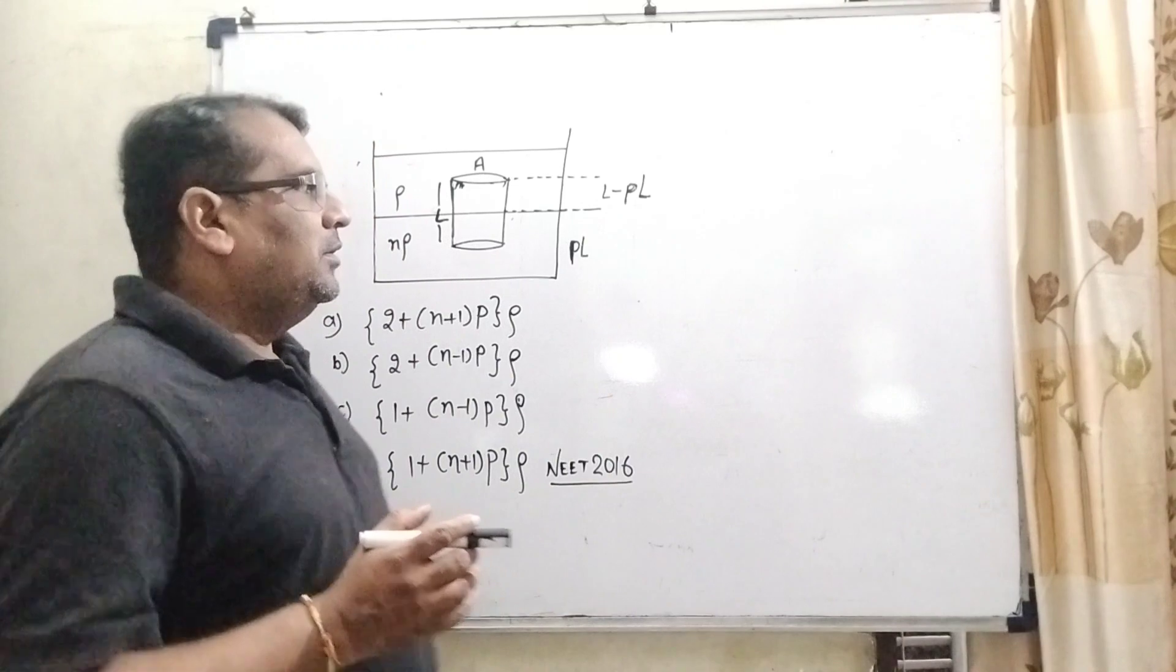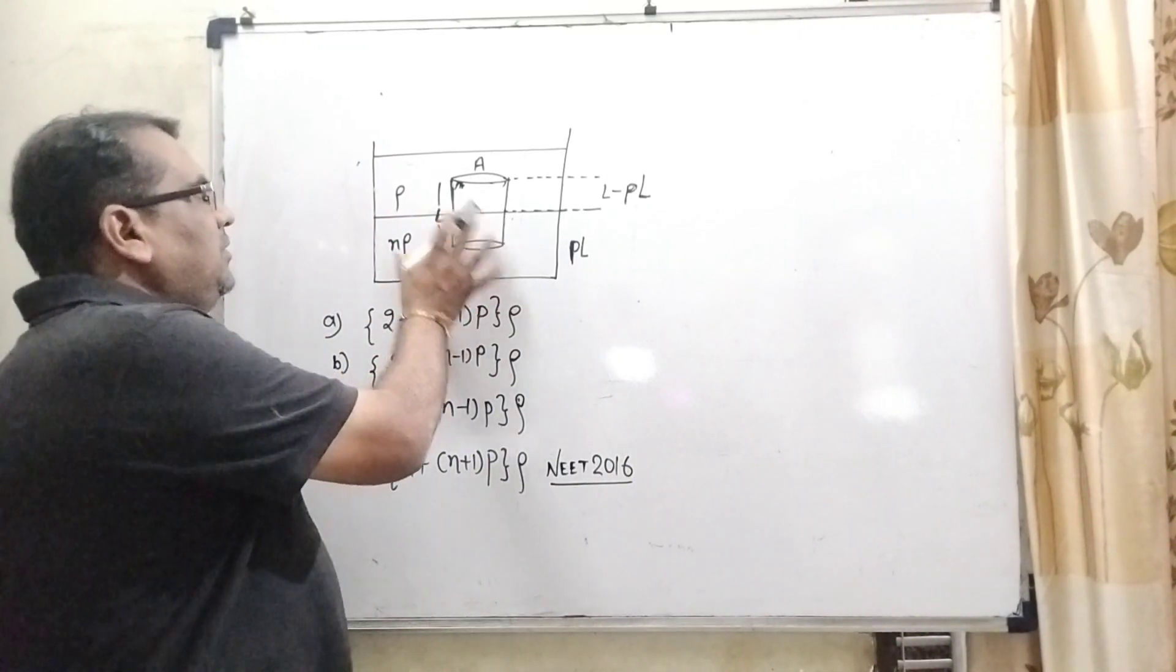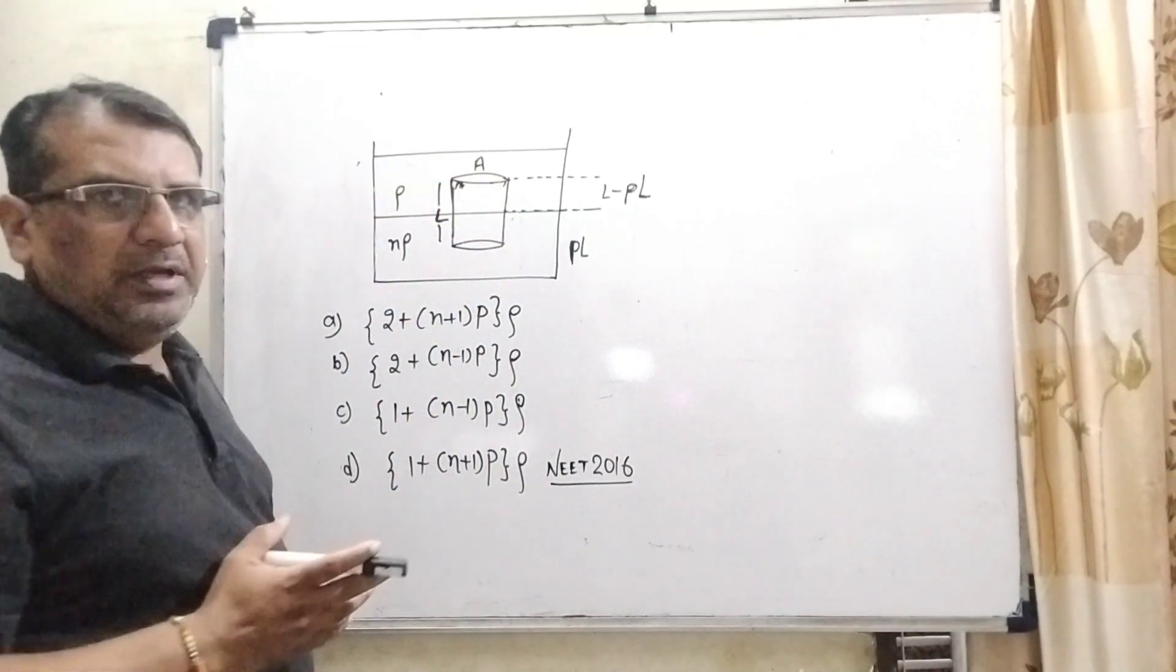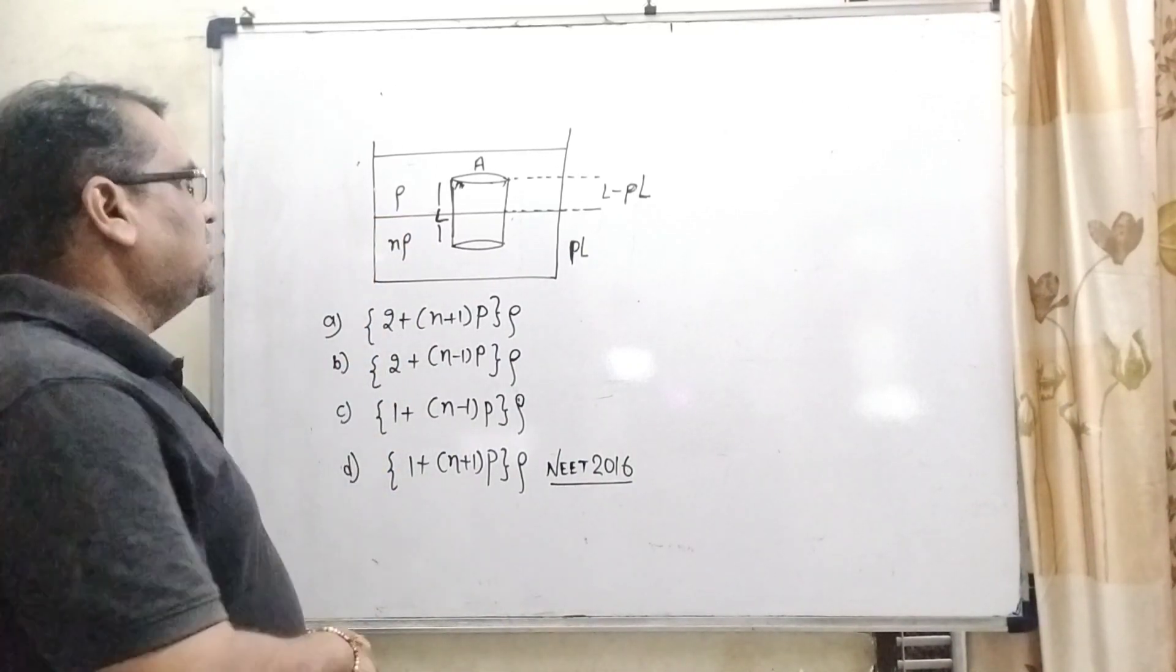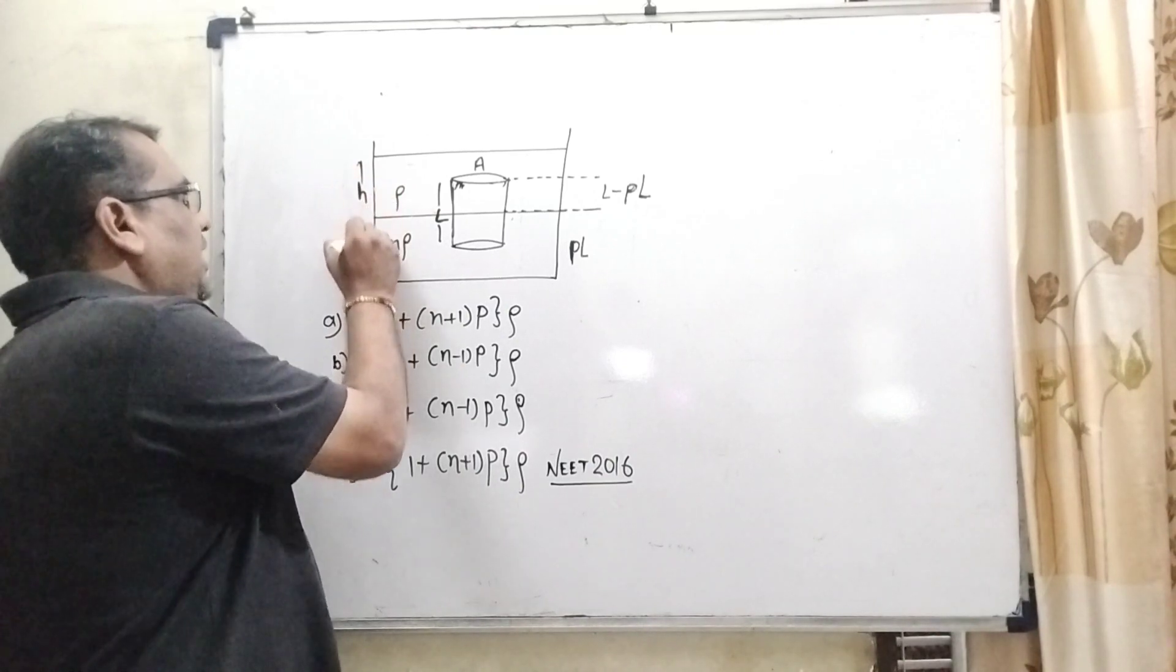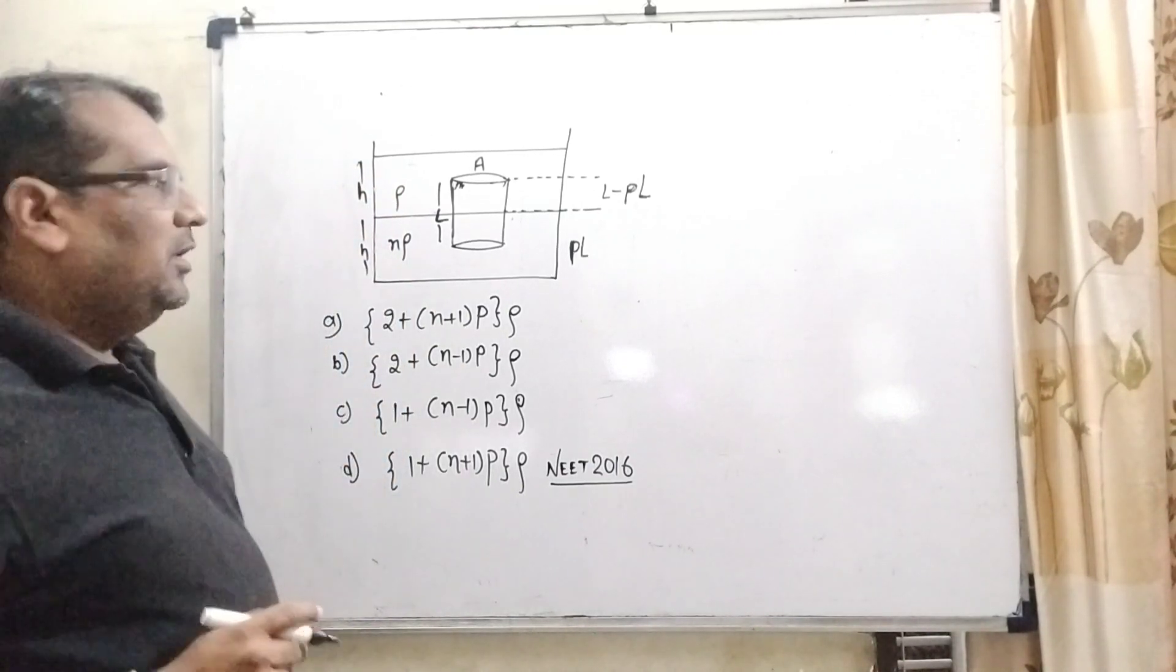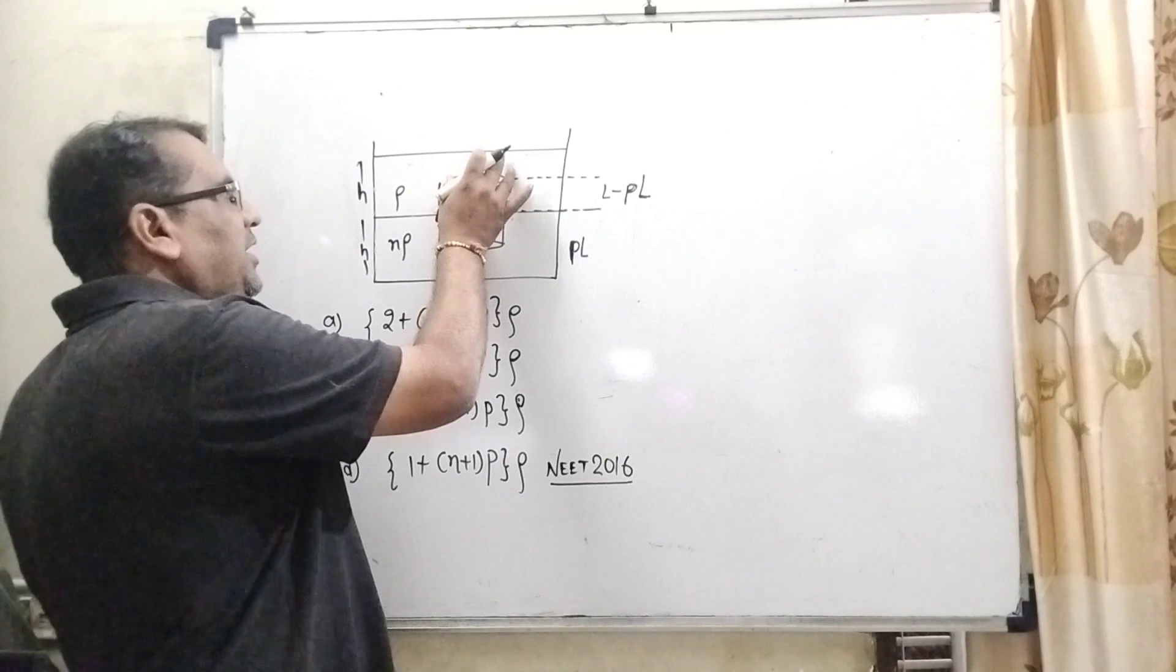So therefore, what does this question say? Here we have given two immiscible liquids which have densities ρ and nρ, and the height of both liquids is h and h.